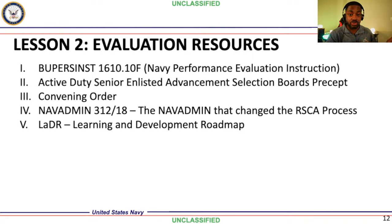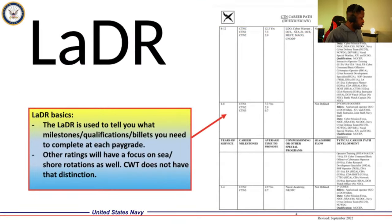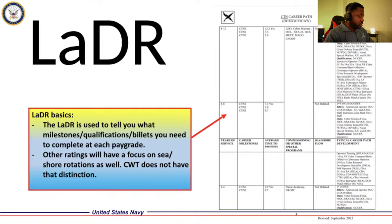The LADDER is important for you in your own rate too, because it tells you exactly where you should be or shows you're tracking ahead of schedule. For example, if the average time to make E-5 in your rate is six years but you made it in four, you're already ahead — you can start looking toward where you're supposed to be from the eight-to-twelve year mark.